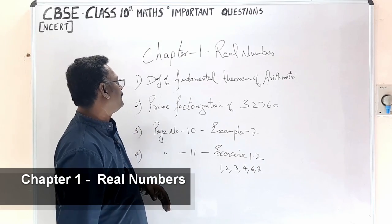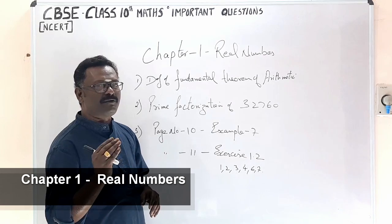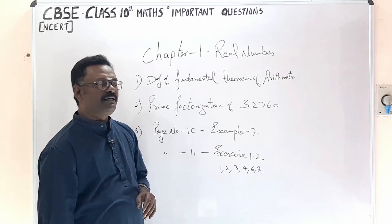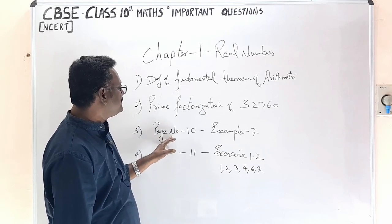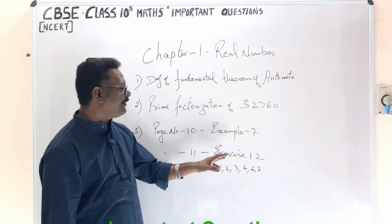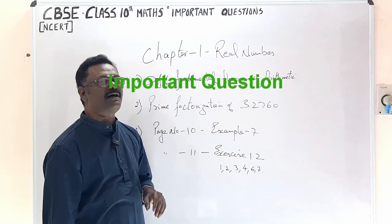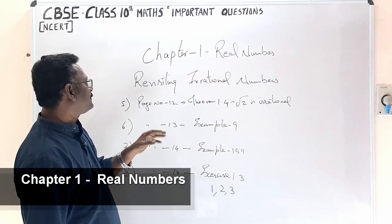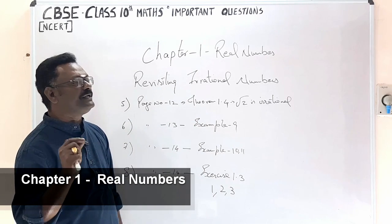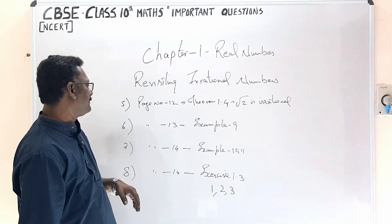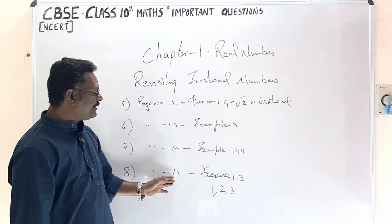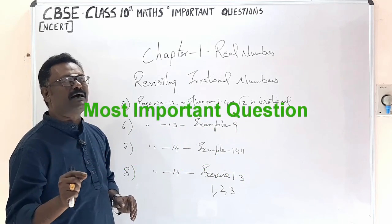Now let's look at the important questions. The Fundamental Theorem of Arithmetic is key — prime factorization of 32760 is an important example. Page number exercises: Exercise 1.2 questions 1, 2, 3, 4, 6, and 7 are very important. Under irrational numbers, page number 12 Theorem 1.4 — that root 2 is irrational — is an everytime asked question. Page number 13 Example 9, page number 14 Examples 10 and 11, and Exercise 1.3 questions 1, 2, and 3 are the most important questions.